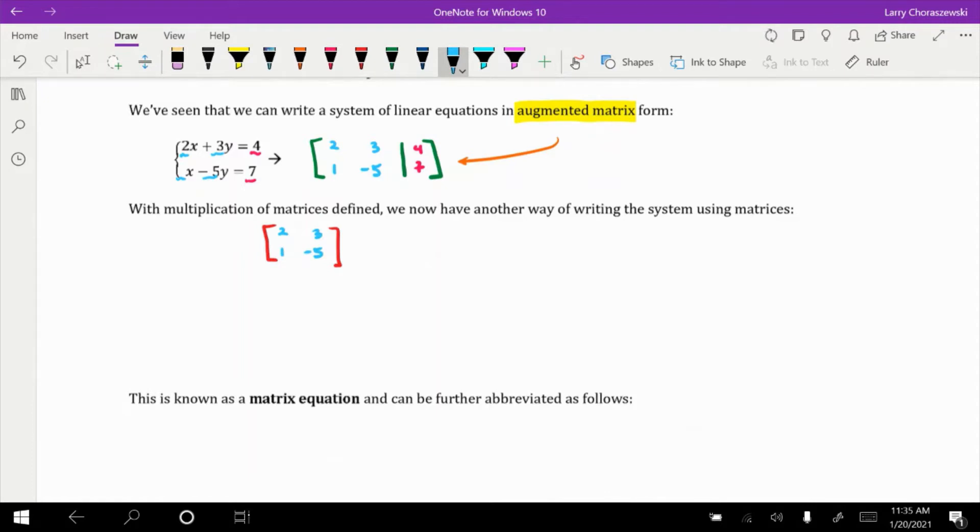Now, to the right of this 2 by 2, I'm going to make another matrix. And it's going to be a 2 by 1. Two rows, one column. And in the first row, I'm going to put the variable x. Second row, the variable y. And I'm going to say that this is equal to a third matrix, which is another 2 by 1. And it's going to consist of the constant values, 4 and 7.